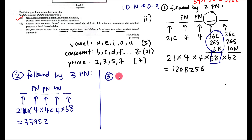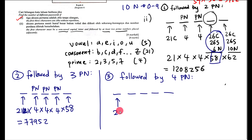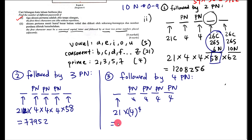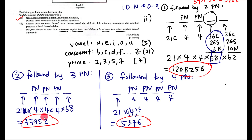Case 3: followed by exactly four adjacent prime numbers, filling all remaining positions. The first place is 21 (non-vowel capital). Positions 2, 3, 4, and 5 are all prime numbers — each with 4 options: 4⁴. Calculation: 21 × 4⁴ = 21 × 256 = 5,376. Now sum all three cases: 1,208,256 + 77,952 + 5,376 = 1,291,584.